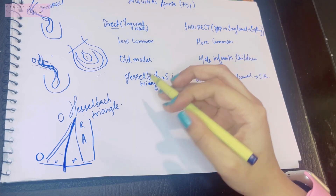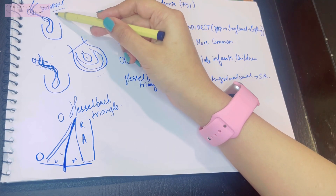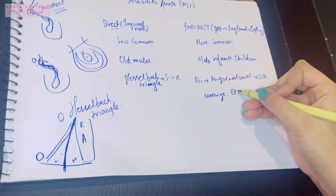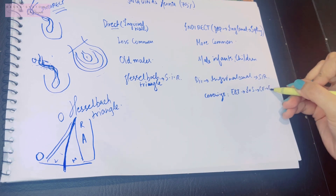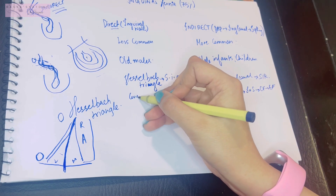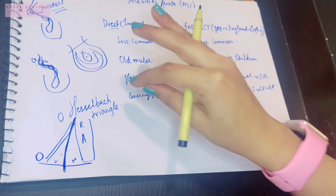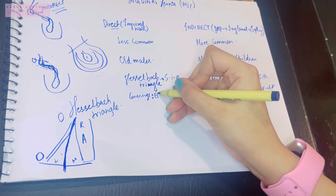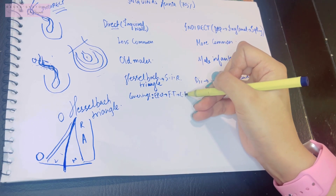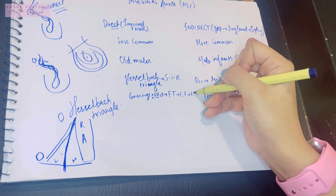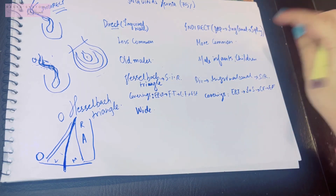The coverings differ between the two types. In an indirect inguinal hernia, the coverings are extraperitoneal connective tissue, internal spermatic fascia, cremasteric fascia, and external spermatic fascia — the same as the spermatic cord. In a direct inguinal hernia, the coverings include fascia transversalis, then cremasteric fascia, and external spermatic fascia. The neck of the sac is wide in direct hernia, whereas it is narrow in indirect inguinal hernia.